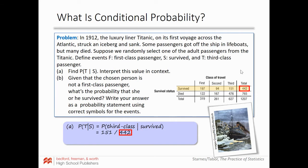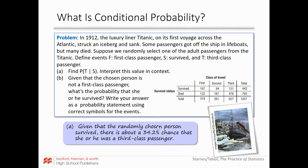I know that the person survived, so I'm looking among the 442 survivors total — that's my denominator. Of those 442, I want to find those who were third-class survivors, which is 151. So the probability is 151 divided by 442, which equals about 0.342. In context: given that a randomly chosen person survived, there is about a 34.2% chance that they were a third-class passenger.